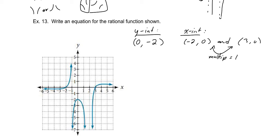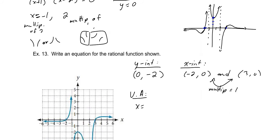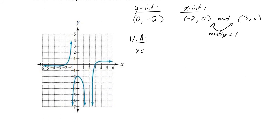We can see vertical asymptotes at x equals negative 1 and x equals positive 2. At x equals negative 1, the function goes in opposite directions indicating multiplicity 1. At x equals 2, the function goes in the same direction, indicating multiplicity 2.